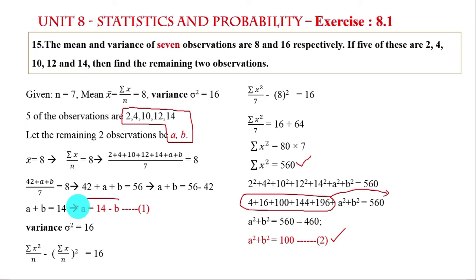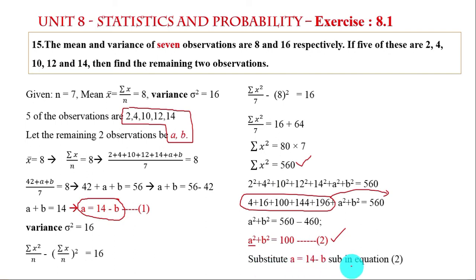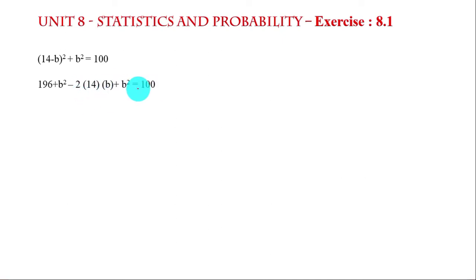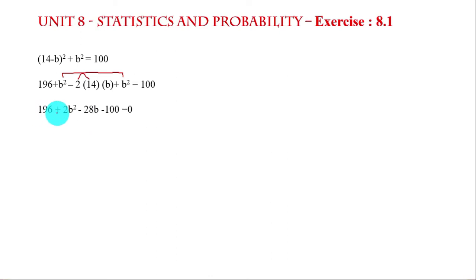From equation 1, a equals 14 minus b. Substituting a equals 14 minus b into equation number 2: (14 minus b) whole squared plus b squared equals 100. Expanding: 196 plus b squared minus 2 into 14 into b plus b squared equals 100. So 196 plus 2b squared minus 28b equals 100, bringing 100 to the left: 196 plus 2b squared minus 28b minus 100 equals 0.